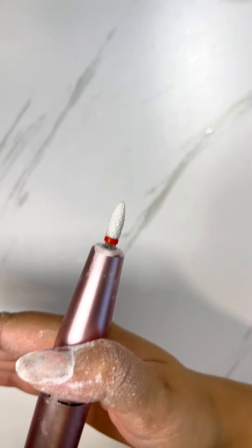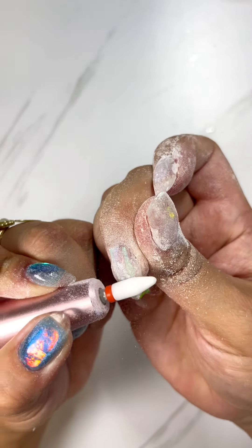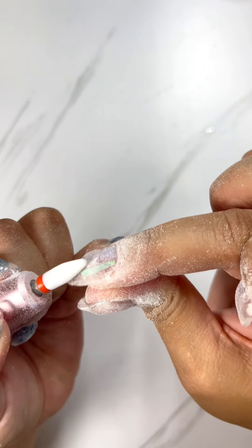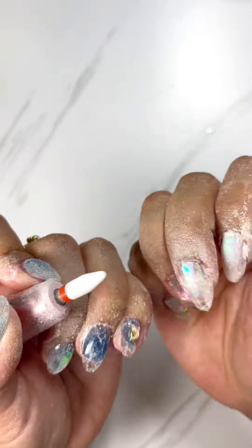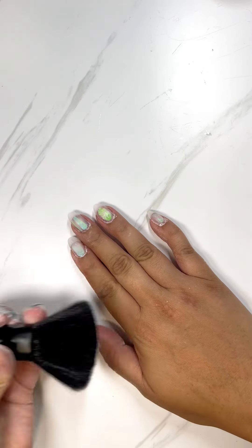I changed drill bits for this nail because it was extra thick and chunky, so I needed something much more coarse. That was also the nail that I decided to experiment with and use three strips of Aurora film. So I think if you're going to use strips, you need to use more gel for overlaying, which can get chunky.